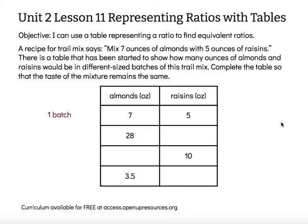This first row in our table shows one batch: 7 ounces of almonds with 5 ounces of raisins. When I look at the next row, I have a 28 in the almonds column, and I think to myself: how do I turn a 7 into a 28? I must have made 4 times as much — so that's 4 batches, which means I need 4 times as many raisins. So I need 5 times 4, or 20 ounces of raisins, so that the flavor of the trail mix stays the same.